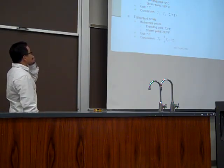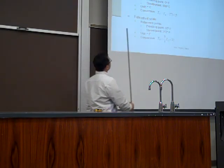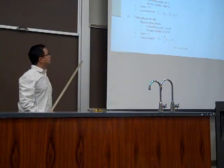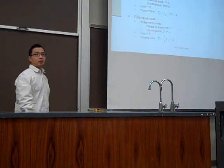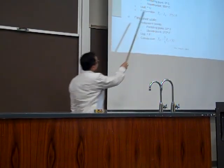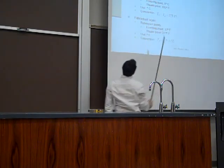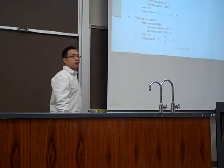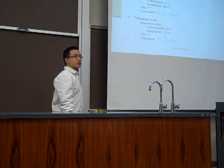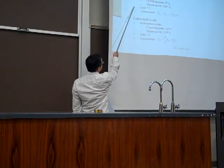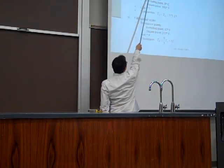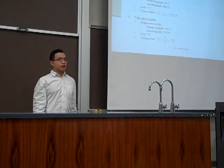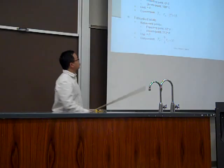Why do we use such a specific number, 273.16, for the triple point? The first reference point is simply zero. The reason we chose this number for the triple point is to match the Kelvin degree to the Celsius degree. Before the Kelvin scale was invented, most people used Celsius, so by matching them, the conversion between the two scales is very simple.